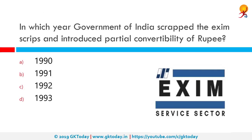In which year did the Government of India scrap the Exim scripts and introduce partial convertibility of the Rupee? It happened in 1992. Exim duty or credit scripts are scripts given to exporters as incentives by the Government of India. The value of scripts was a percentage of the FOB value of goods and services exported. Now we work with partial convertibility of the Rupee.